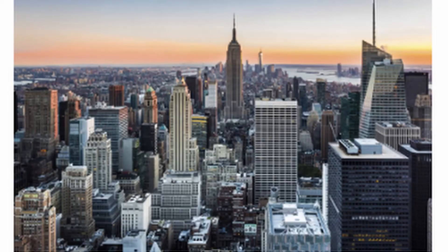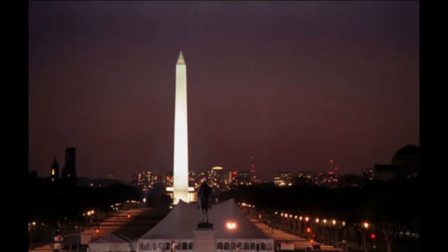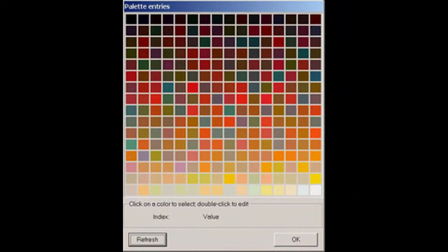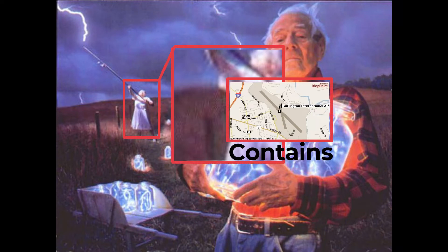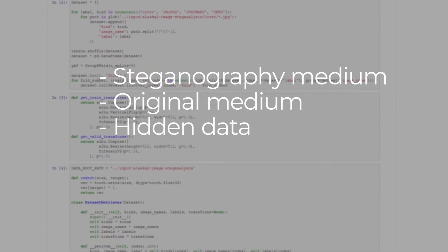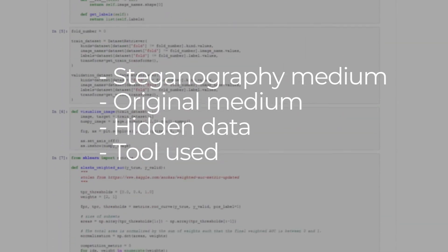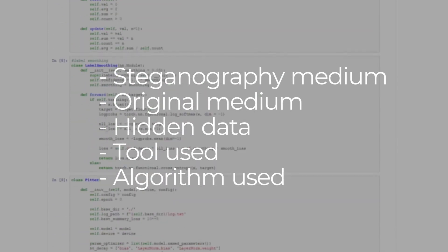The problem with steganalysis is the inability to distinguish between an encoded image and an unencoded image. The message can be stored through an extended color palette or even sub-pixel values. Thus, you cannot apply any steganalysis techniques until you're given any combination of the following: the steganography medium, the original medium, the hidden data, the tool used to create the steganography medium, and/or the algorithm used to do the steganography. With modern technologies and AI, surely this is a problem that can be more efficiently solved?